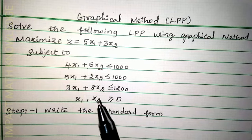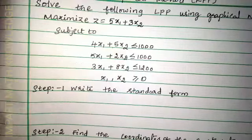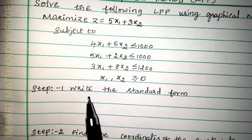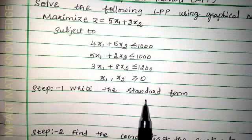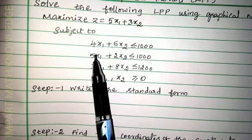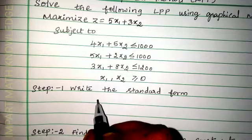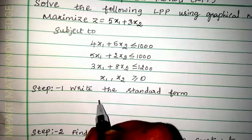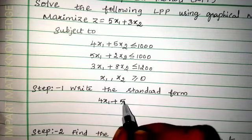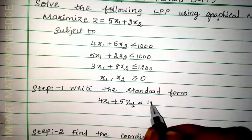Graphical method is possible only for two variables. Now let us move on to the solution part. Step 1 is to write the standard form.